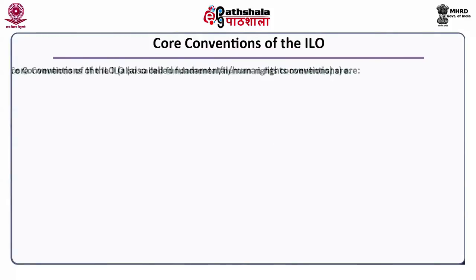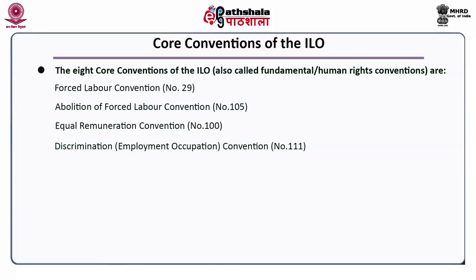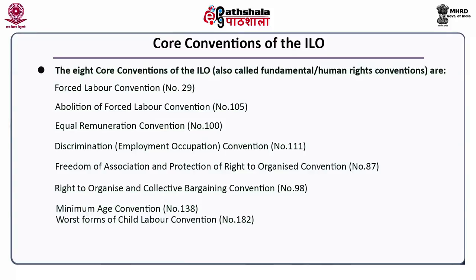The eight core conventions of the ILO, also called the fundamental and human rights conventions, are: Convention No. 29 — Forced Labour; Convention No. 105 — Abolition of Forced Labour; Convention No. 100 — Equal Remuneration; Convention No. 111 — Discrimination (Employment and Occupation); Convention No. 87 — Freedom of Association and Protection of the Right to Organize; Convention No. 98 — Right to Organize and Collective Bargaining; Convention No. 138 — Minimum Age; and Convention No. 182 — Worst Forms of Child Labour.